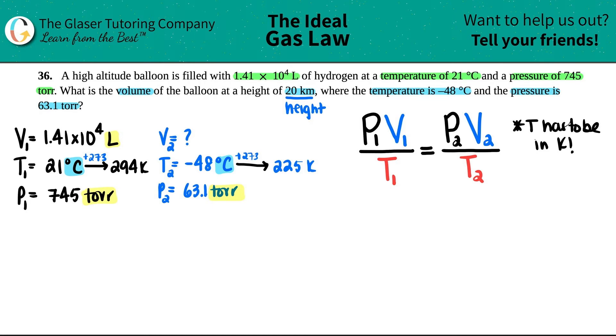So let's just plug it all in. 745—now when I'm plugging in my numbers, I don't put any units in because I just checked beforehand. This one is 1.41 times 10 to the fourth, all divided by that new temp which is 294. And this equals the twos, so the pressure was 63.1 times X, because I'm solving for that. I just like to use X. And this is over my new temperature which is 225.